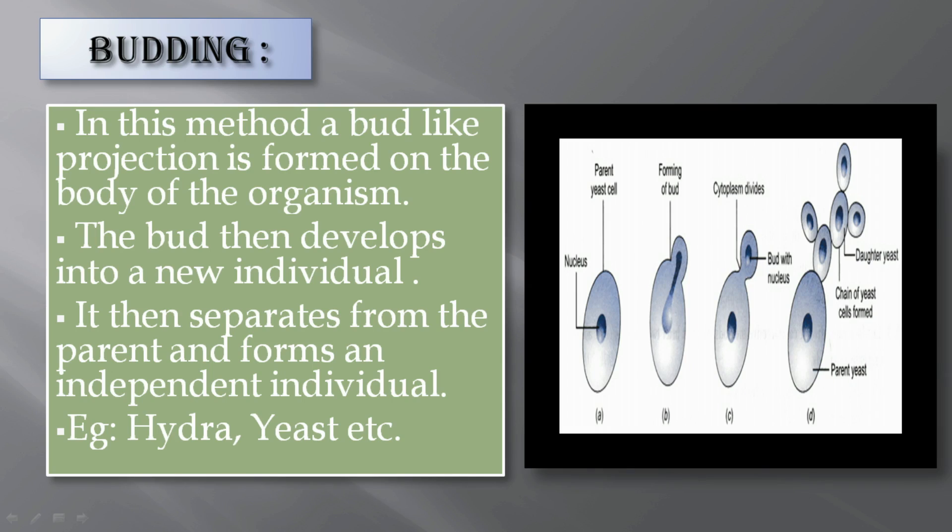Next asexual reproduction: budding. In this method, a small bud or outgrowth is formed in the body of the organism which, upon maturity, gets separated from the parent and develops as a new individual. Example: hydra, or in unicellular organisms, yeast.